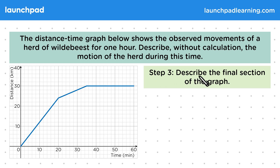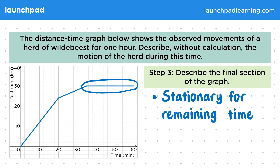Then for step three, describe the final section of the graph. Notice that this section is horizontal. Remember that a horizontal line in a distance-time graph means the object is not moving, so we can just say that the herd was stationary for the remaining time. You didn't have to give your answer in exactly this way, so long as you get the key ideas across clearly. You also might not have had to give this much detail depending on how many marks the question is worth, but if you have the time and don't make any mistakes, it's usually better to say too much than too little for this kind of question.